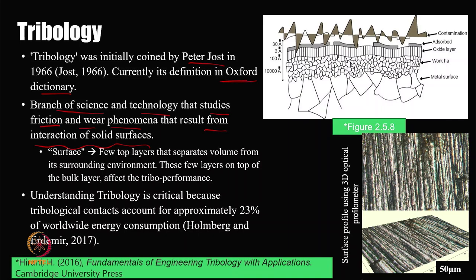What do we mean by 'surface'? A surface consists of the top few layers that separate the bulk volume from the surrounding environment. These top layers — including a work-hardening layer, an oxide layer, an adsorbed layer, and a contamination layer — all affect tribological performance. Their thickness is at the angstrom level, much smaller than the bulk, but all four layers significantly influence behavior.